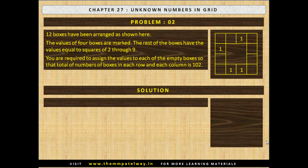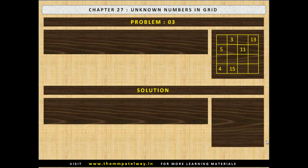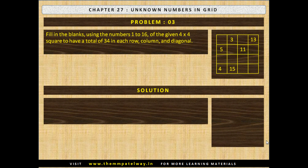The solution is shown. Problem 3. Fill in the blanks using the numbers 1 to 16 of the given 4×4 squares to have a total of 34 in each row, column and diagonal. Can you have any total other than 34? If yes, why? If no, why not?